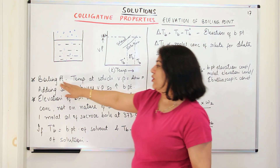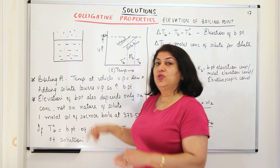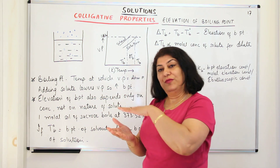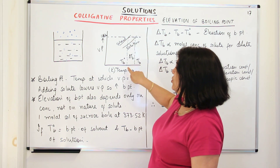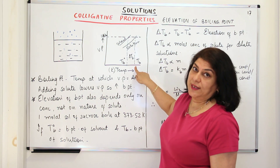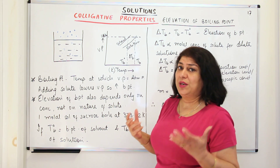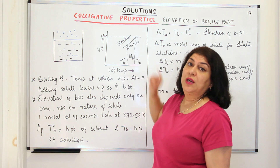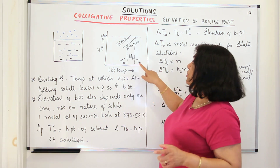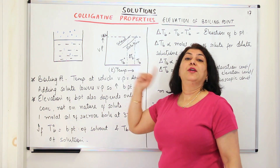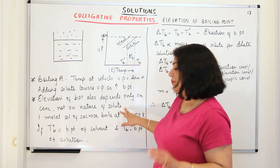Boiling point is the temperature at which vapor pressure becomes equal to atmospheric pressure. Adding a solute lowers the vapor pressure and therefore increases the boiling point. The boiling point of the pure solvent is lower, but when you add solute to it, the boiling point of the solution is higher. The elevation in boiling point, delta Tb, is the difference between the two boiling points: delta Tb equals Tb minus Tb0. Since Tb is higher than Tb0, this is a positive value. Elevation of boiling point depends only on concentration, not on the nature of the solute — therefore it is a colligative property.